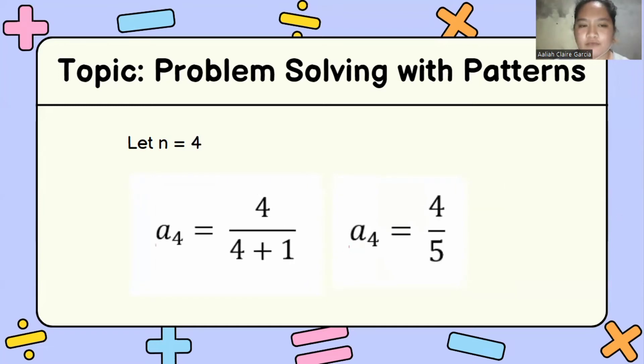Next, to get the fourth term, let n is equal to 4. a sub 4 is equal to 4 over 4 plus 1. a sub 4 is equal to 4 over 5.